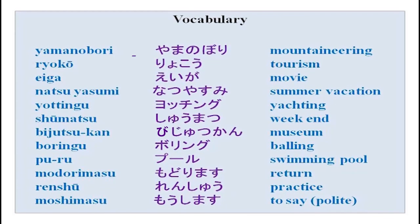This is the vocabulary in the lesson: yamanobori (mountain climbing), ryokou (trip/tourism), eiga (films), natsuyasumi (summer holiday), yachting, shuumatsu (weekend), bijutsukan (art museum), bouringu (bowling), puuru (swimming pool), modorimasu (to return), renshuu (practice). Now your work begins — you have to do all this at home. Whatever you have done today, practice with your partner or loudly at home so that you can remember and not forget.